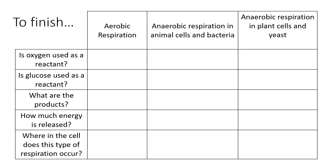You have a column for aerobic respiration, a column for anaerobic in animal cells and bacteria, and a column for anaerobic in plant cells and yeast. Answer each question on the left-hand side and match it up to each of the relevant types of respiration. Pause the presentation now, and when you're ready, you can restart and check your answers.